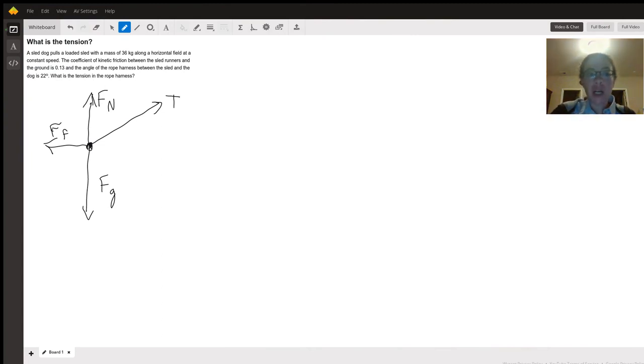I've drawn a free body diagram of this problem. We have tension acting at 22 degrees, the force of friction acting to oppose motion, the force of gravity or weight, and finally a normal force. Crucially, the normal force is not equal to the weight. Tension is also acting to oppose gravity, so not the full weight of the sled is resting on the ground.